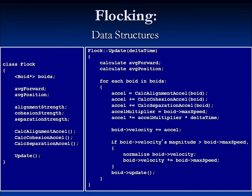Usually, our update will be invoked with some kind of delta time, and we will calculate the average forward vector and the average position of all the boids in the flock. Then, for each of those boids, we calculate the acceleration that results from each of the influences. That acceleration is then scaled by the amount of time this tick represents and the max speed of the agent. Once calculated, it's added to the velocity of the boid. If the boid has exceeded its maximum speed, we scale that back. Finally, we call the boid's update function so that any internals that need to be updated can be.